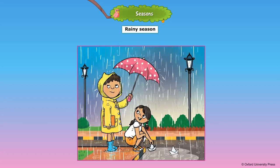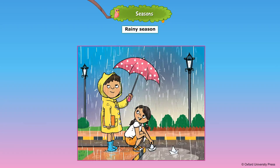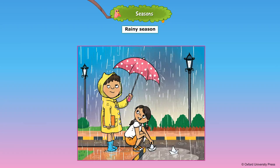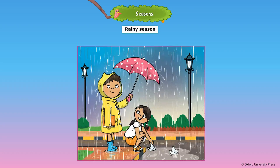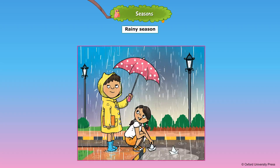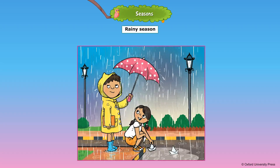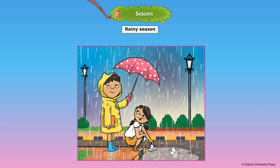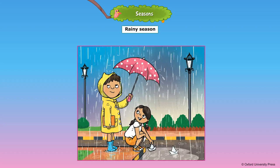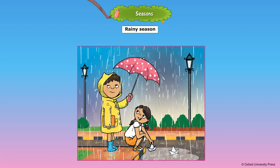The rainy season is also called monsoon. Dark clouds appear in the sky along with lightning and thunder. We use umbrellas or wear raincoats when we go out in the rain. During the rainy season, we like to eat hot food and drink soup, tea, or coffee.